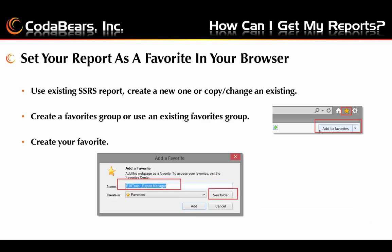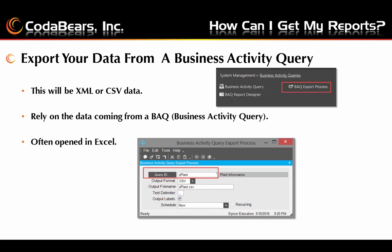You can also set up your report as a favorite in your browser. You can use an existing SSRS report, create a new one, or copy and change an existing one to create a new one. You create a favorites group or use an existing favorites group, and then create your favorite. These work best with reports that are not BAQ reports or report data definition reports, because you would need the GUID — the globally unique identifier — to work with any favorites in your browser.